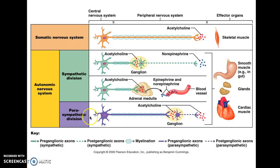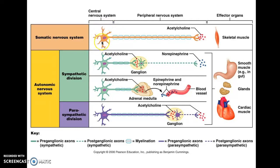This chart shows the structure of motor pathways within each division. In the somatic nervous system, the effector is skeletal muscle. Cell bodies are located in the spinal cord within the central nervous system, and these neurons have long axons that travel all the way out to the effector. To communicate with the effector, they release a neurotransmitter called acetylcholine.